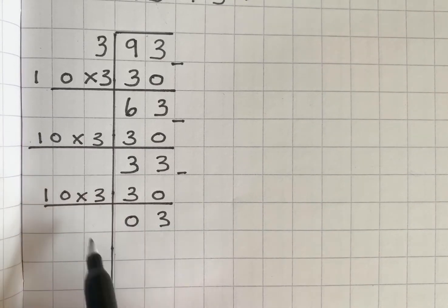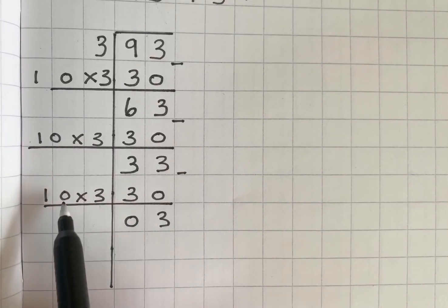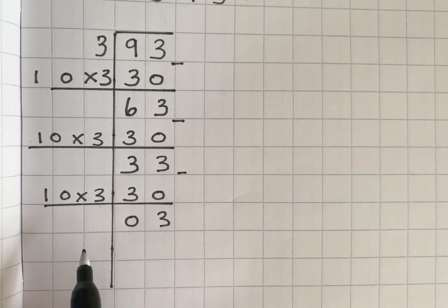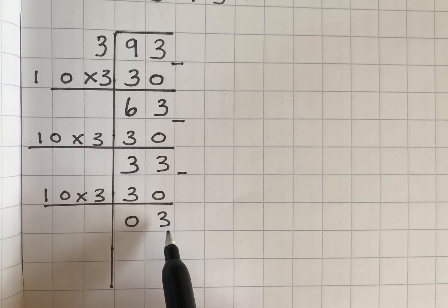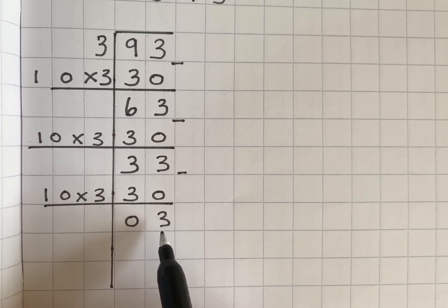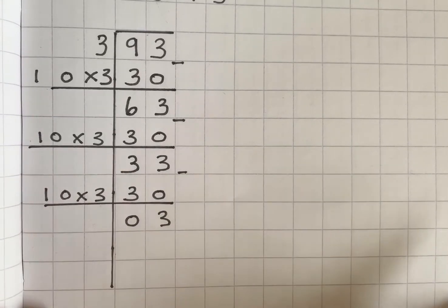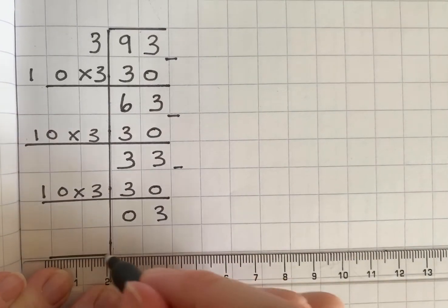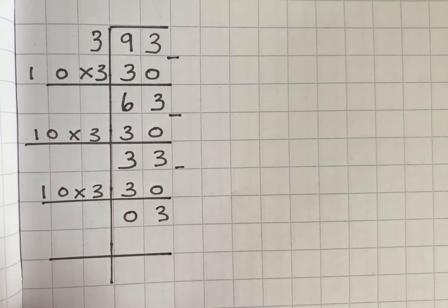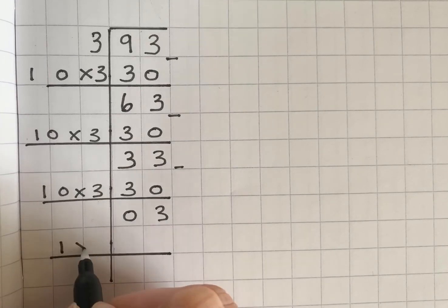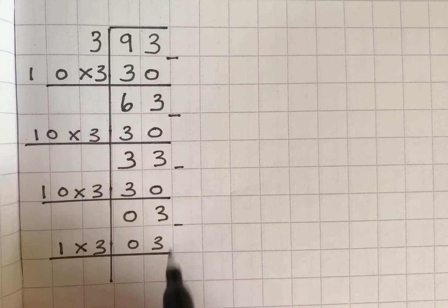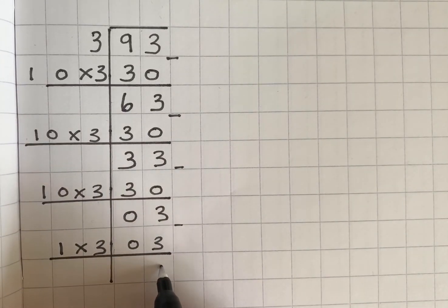So this is the part where some people want to take away another chunk of 10 times 3 but I can't because that would be 30 and I only have 3 left. So I can only take away 1 times 3.